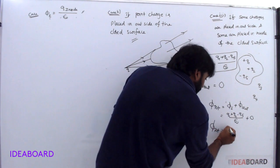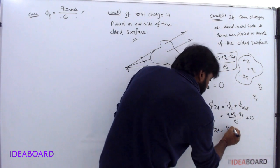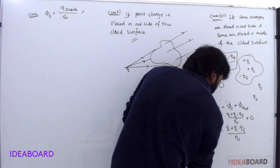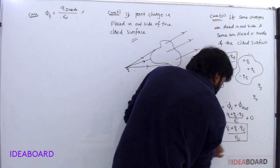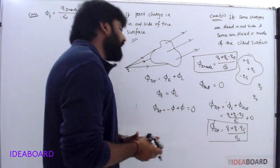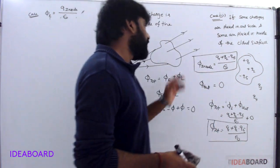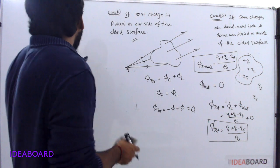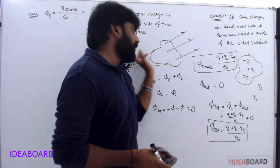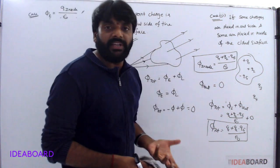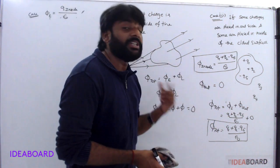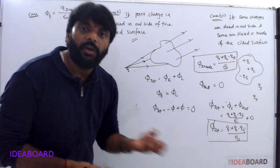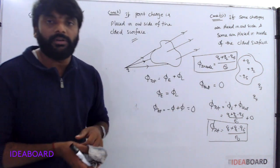Total flux is equal to q1 plus q2 minus q5, by epsilon naught. This means flux is developed only due to the charges inside the enclosed surface. For charges outside the enclosed surface, the flux is zero.